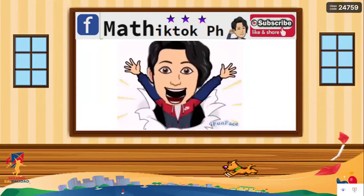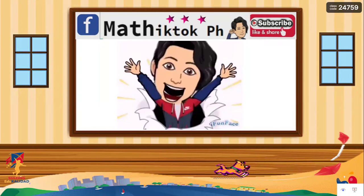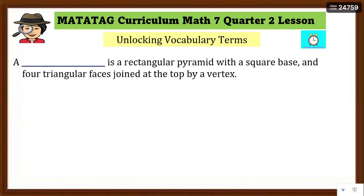Hi, good day! Hello students, welcome back to my YouTube channel. Don't forget to subscribe. Our learning objectives: at the end of the lesson, students will be able to determine the side and height of a square pyramid, find the volume of a square pyramid, and solve problems involving the volumes of square pyramids. This is what Grade 7 students need to learn in the MATATAG curriculum for Mathematics Quarter 2.